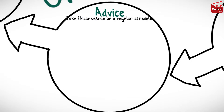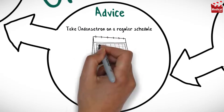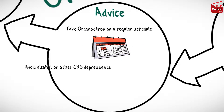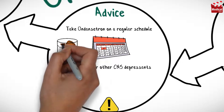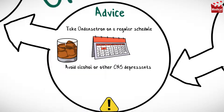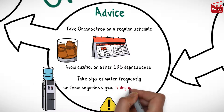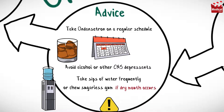Take ondansetron on a regular schedule, not as needed. Avoid using alcohol or other CNS depressants. Take sips of water frequently, or chew sugarless gum if dry mouth occurs.